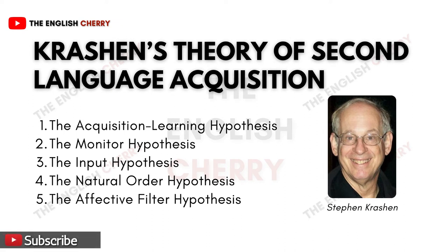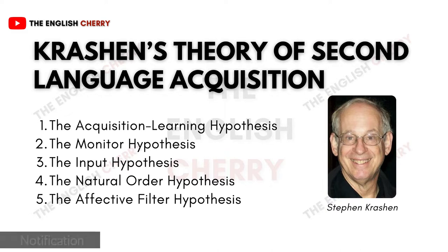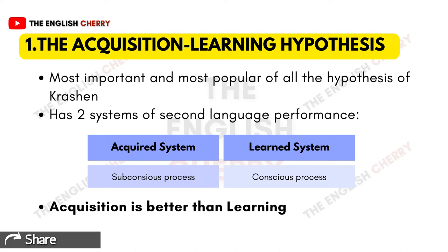We will begin with Stephen Krashen's theory of second language acquisition. The learning of a second language happens after a first language is already established. As discussed in the previous video, acquisition is a subconscious process, and here Krashen is talking about learning a second language subconsciously without making the learner aware that they are actually learning a language. This theory mainly consists of five hypotheses: the acquisition-learning hypothesis, the monitor hypothesis, the input hypothesis, the natural order hypothesis, and the affective filter hypothesis.